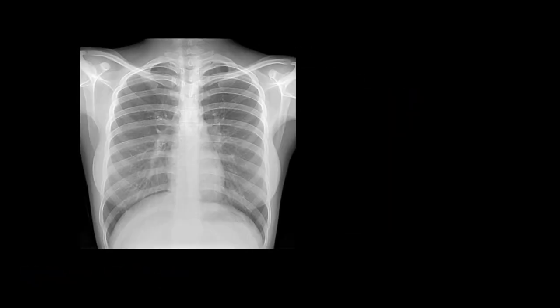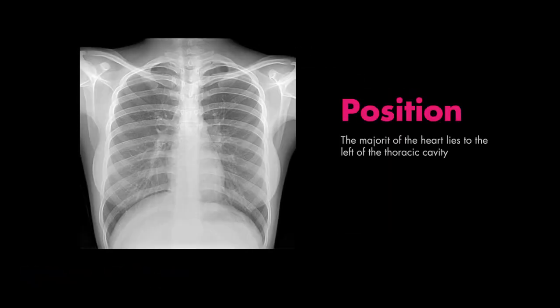Lastly, make note of the heart position. Normally, two-thirds of the heart lies to the left of the thoracic cavity on chest x-ray, and roughly one-third of the heart lies to the right.